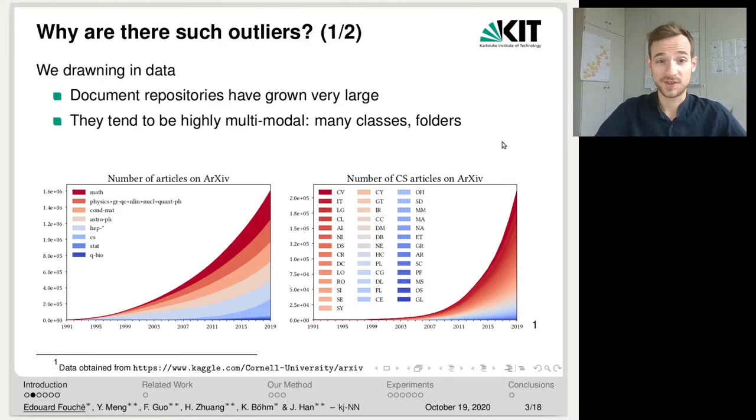And so why are there such outliers in the first place? Well, the first reason is that we are drowning in data and the existing document repositories have grown very large. Take for example, the number of articles published on arXiv over the last few years. This number of articles has increased tremendously. Also, the articles tend to be highly multimodal. There are many classes, many folders and subcategories. See for example, the distribution of articles in computer science on arXiv. There are many subcategories and so when ordering the different articles in subcategories, it is very likely that there will be some mistakes.